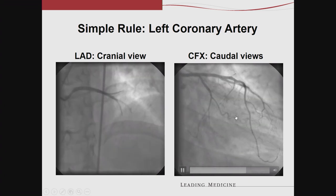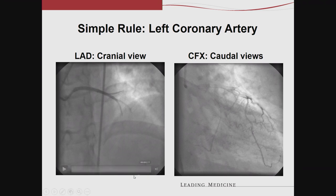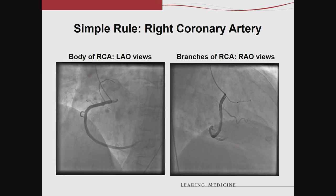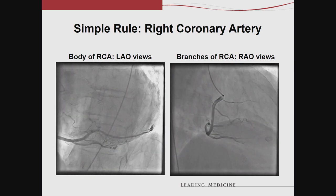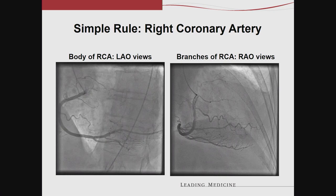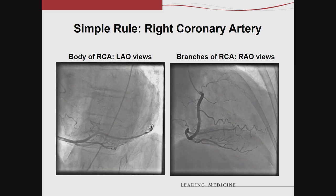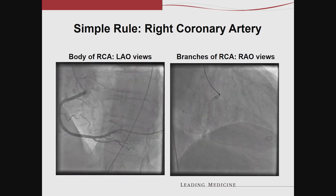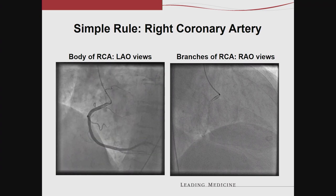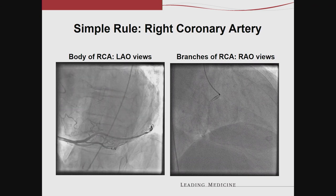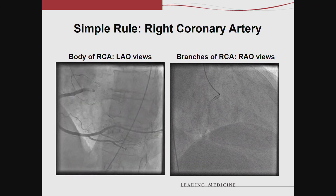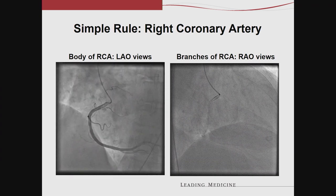On the right panel is a caudal view, which is most beneficial for looking at the circumflex system. Variations of cranial and caudal angulations are what we need to do. The right coronary artery is a little simpler — generally an LAO view gives a good image of the body of the right coronary artery, while the RAO views show the branches of the right coronary artery. Variations of these views are important.